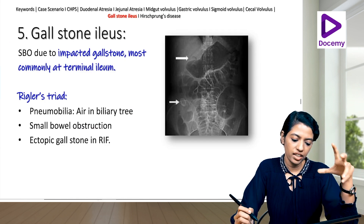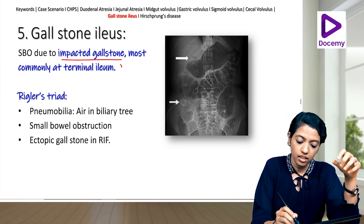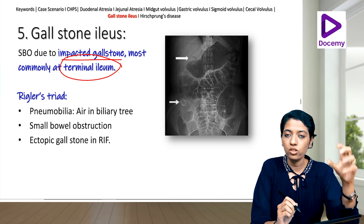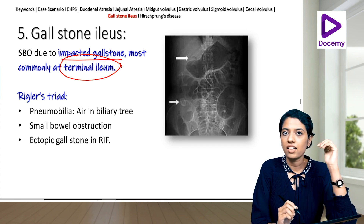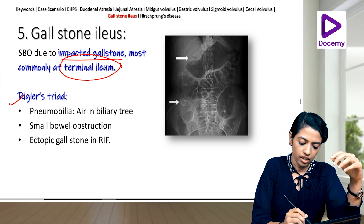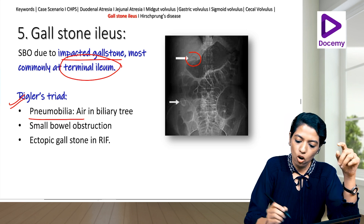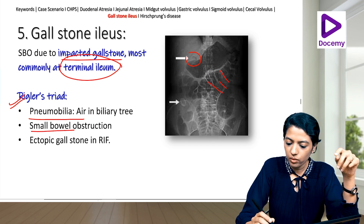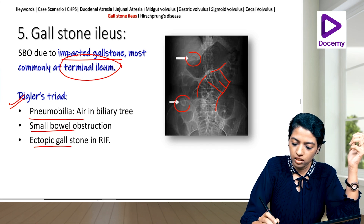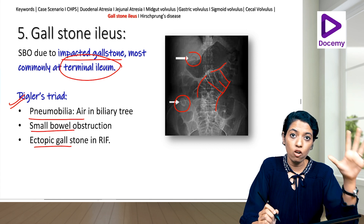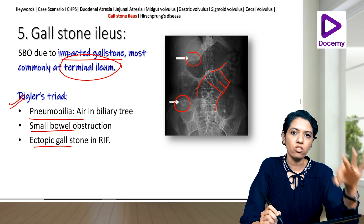Gallstone ileus is small bowel obstruction due to an impacted gallstone, mostly at the terminal ileum. It is associated with Rigler's triad: pneumobilia (air in the biliary tree), small bowel obstruction with dilated loops and valvulae conniventes, and an ectopic gallstone impacted in the right iliac fossa.